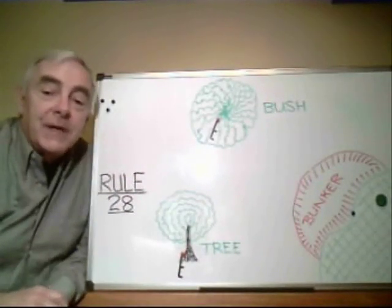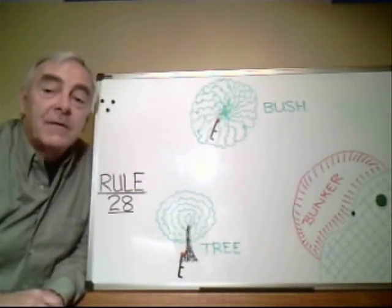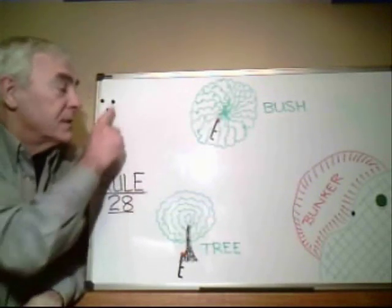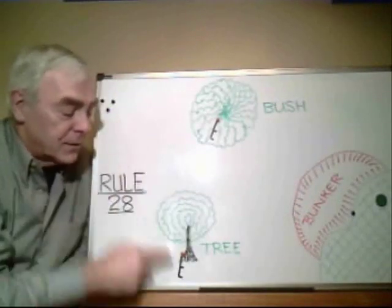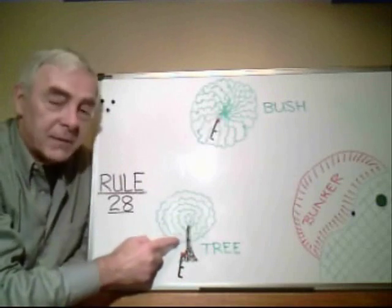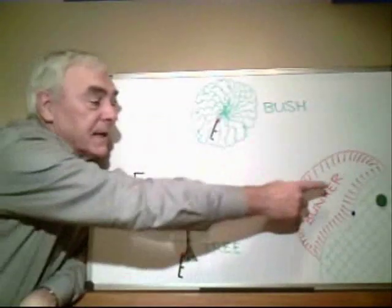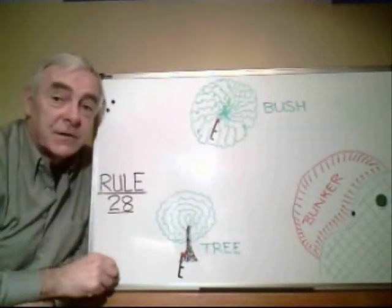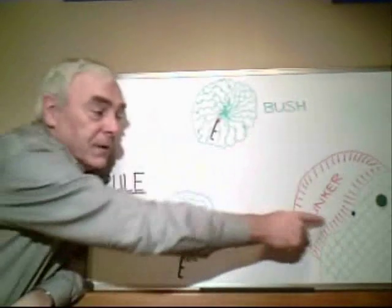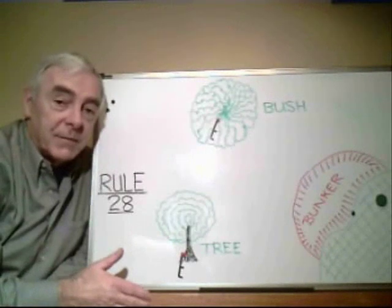So these are the three different options under Rule 28 for taking relief for an unplayable ball. You can take your shot from where you played your last stroke from. You can take relief within two club lengths of where the ball lies, not nearer the hole. Or you can take a line from the hole through the point where the ball is at rest and go back as far as you like along that line. If your ball is in the bunker under options B and C, you must drop the ball in the bunker.